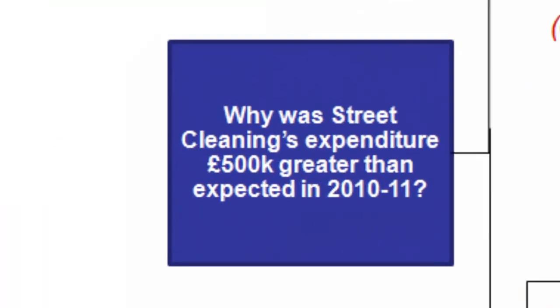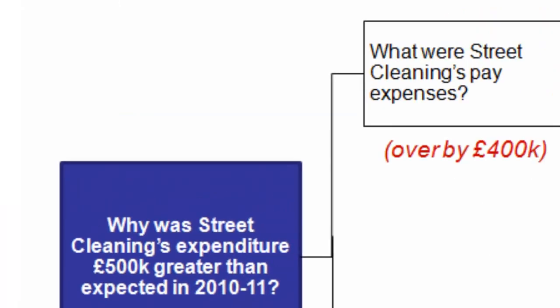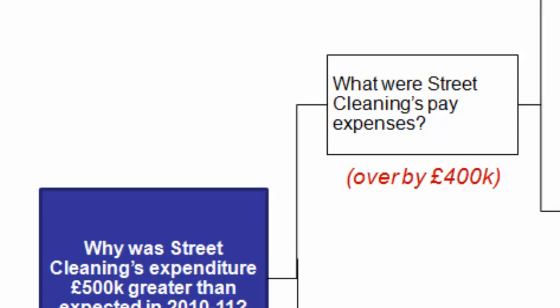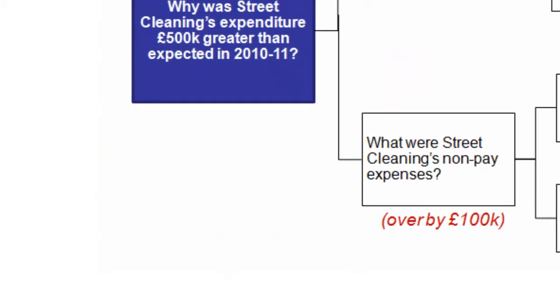The team first inserts the problem to be disaggregated into the left-hand box. For costs, the team breaks this down into pay and non-pay costs. Pay costs were £400,000 over budget, and non-pay costs were only £100,000 over budget. Already we have a strong steer that much of our solution lies in pay costs.